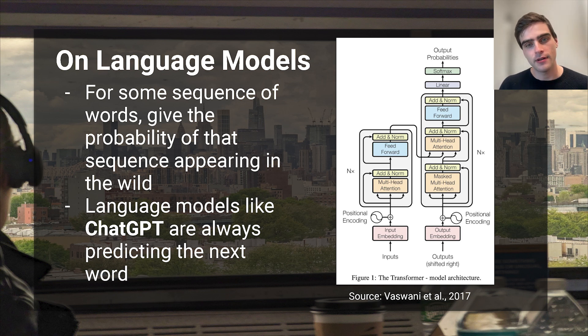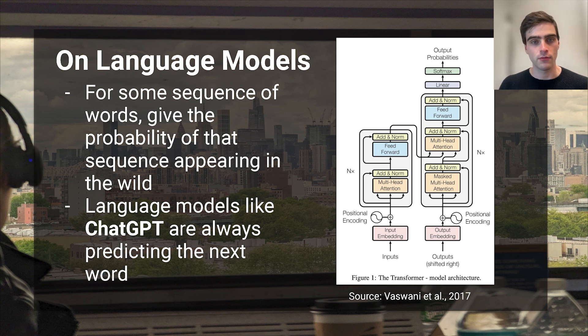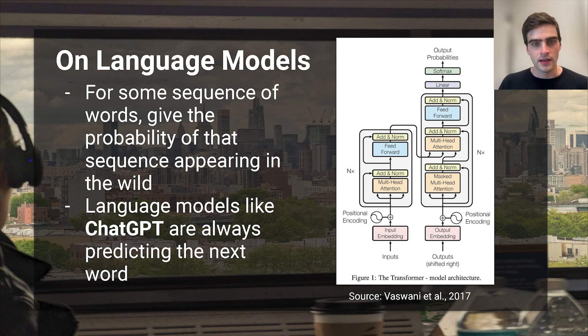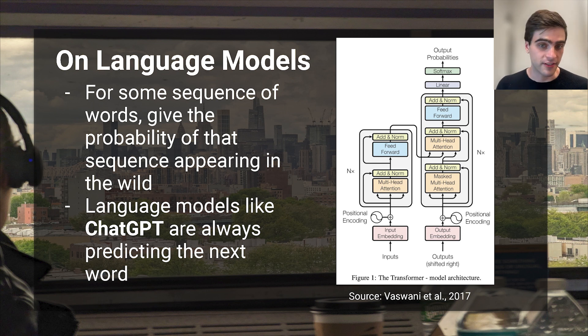But how does a language model work? In this video, I'll go through the fundamentals of text generation. Along the way, we'll learn what hallucinations are. In the last video, I explained language models are designed to do one thing and one thing only: for some sequence of words, what is the probability of that sequence appearing in nature? Language models are designed to produce this probability. You might think that this probability on its own — just a percentage — isn't very interesting. But there's a lot you can do with it.